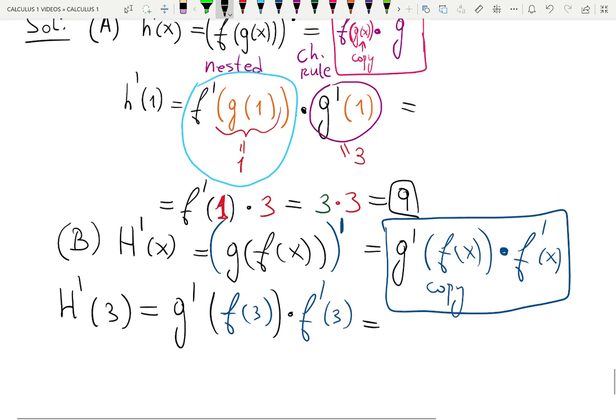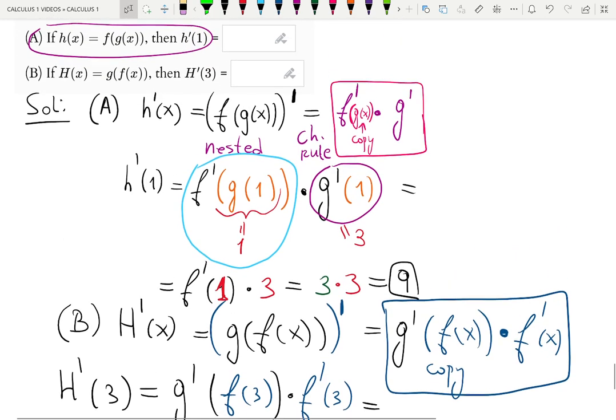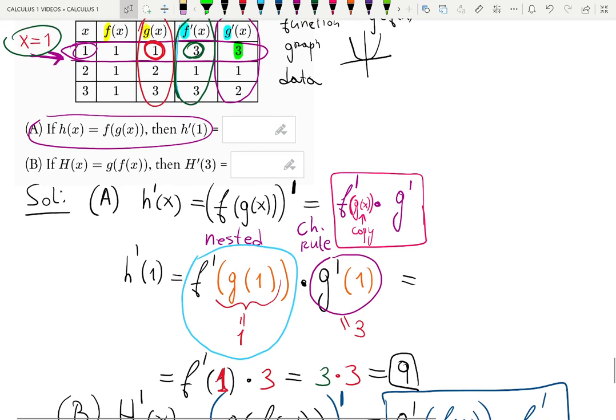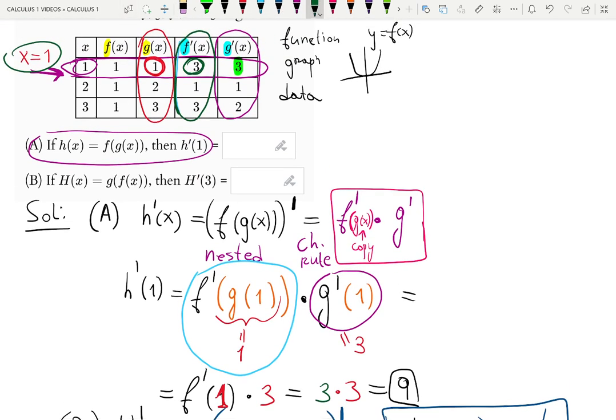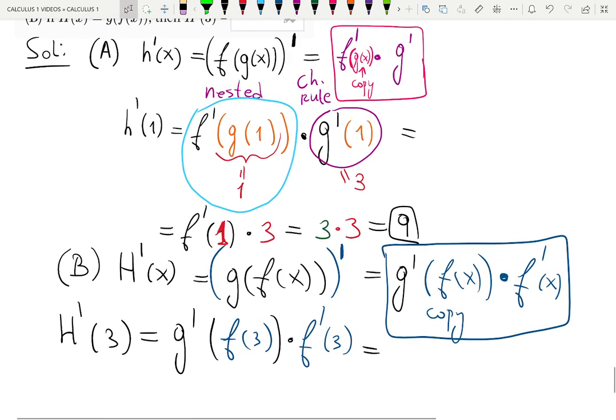g prime at f of 3 multiplied by f prime at 3. Again, I will start with f prime because it seems to be easier. f prime is the column in green. I already used it before. f prime this time needs to be looked at 3. So I'm looking at the last row. x equals to 3. And finding the intersection. The answer is 3. Again, not very creative. Why we keep dealing with the same numbers. But it's fine. It's data after all.